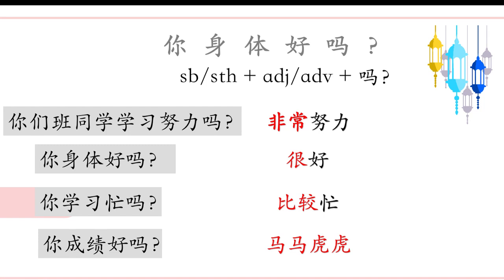So how to answer these questions? When we ask with an adjective working as predicate, we usually answer with that adjective. 努力吗？努力。好吗？好。忙吗？忙。Only one exception is 马马虎虎 — so-so. It's very useful; you can use it to answer any kind of question when they ask your opinion.